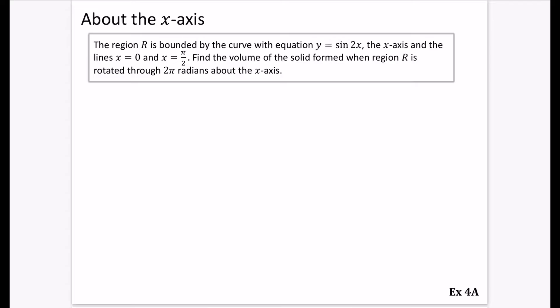So really simple for this. It's going about the x-axis. So the volume is going to be pi y-squared dx, and our limits for x are 0 and pi over 2. So what we need to integrate here is pi of y-squared. Y-squared is going to be sine-squared 2x dx.